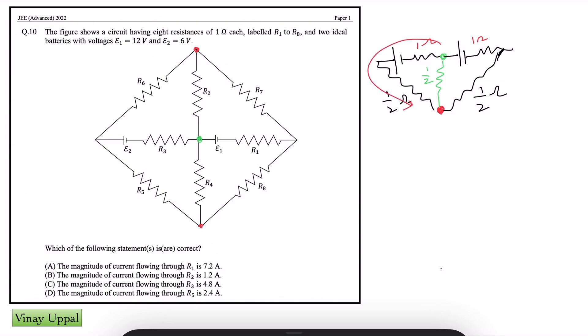Similarly, 1 ohm and this half ohm are in series because they are also along the same branch. And therefore, I can redraw my circuit. So this is 6 volt E2 value and combination of 1 and half will be 3 by 2 ohms. This is 12 volt, 3 by 2 ohms again. And between is half ohm. So this is my circuit.